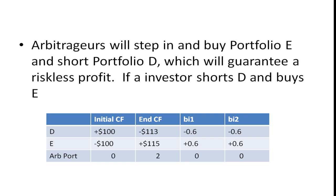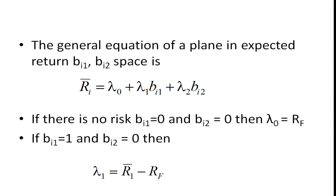The general equation of a plane in expected return bi1, bi2 space is written this way: the expected return of i equals lambda_0 plus lambda_1 times that first risk factor plus lambda_2 times that second risk factor. If there's no risk—that is, bi1 = 0 and bi2 = 0—then lambda_0 should be the risk-free rate. Sometimes we use something called the zero-beta portfolio, but let's just assume it's the risk-free rate.